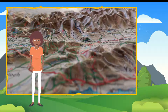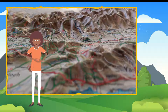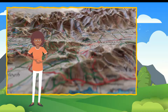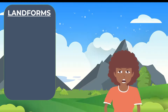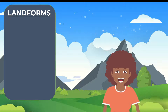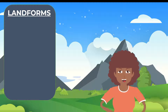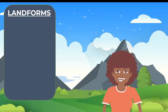Our planet is not flat. It consists of hills and mountains, lakes and oceans. Landforms are features of the land surface of the earth. They are solid and consist of rock and soil.